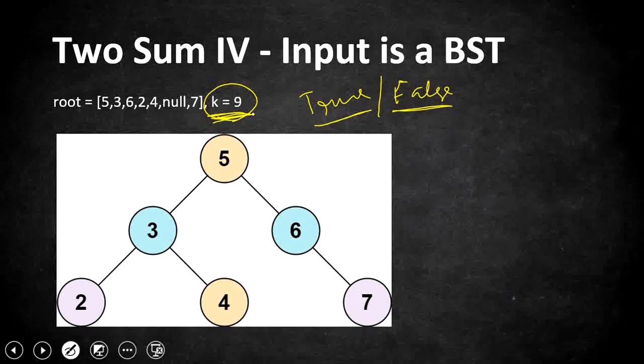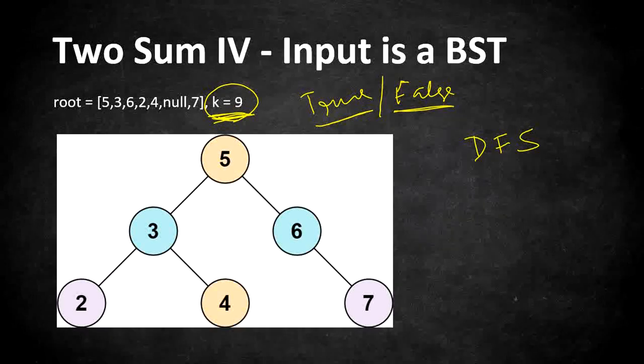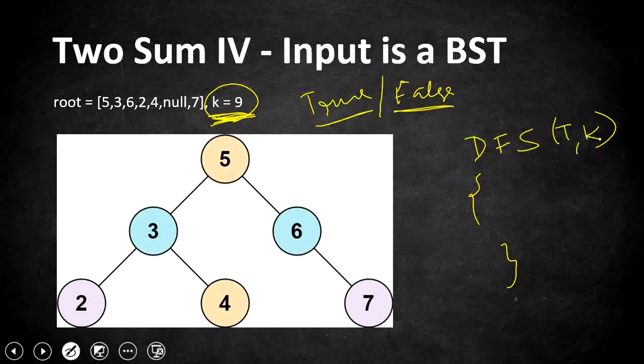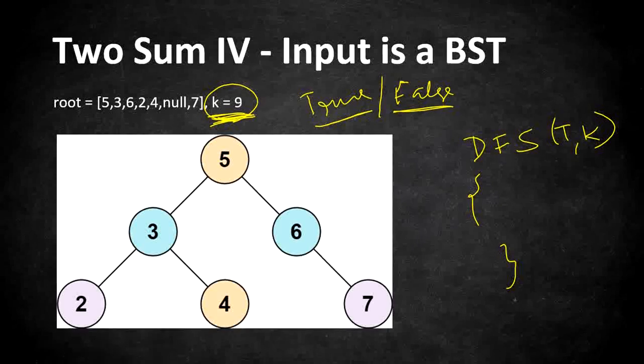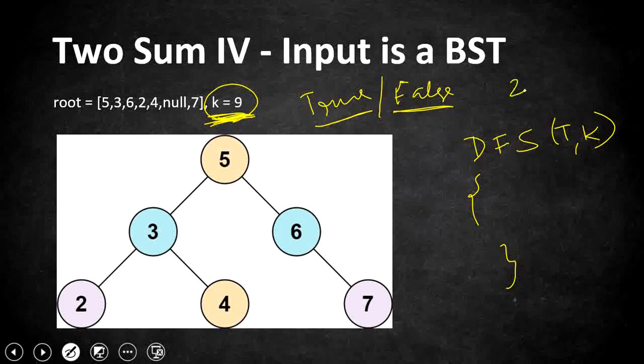We have seen enough BST problems before and we know how to do a basic traversal. As usual, we are going to use a DFS technique to traverse the given BST and recursive DFS comes in handy to traverse the tree efficiently. We are going to use a basic recursive traversal where we pass the root of the node, and how are we going to find whether two elements sum up to k using the very similar technique we used in the Two Sum problem.